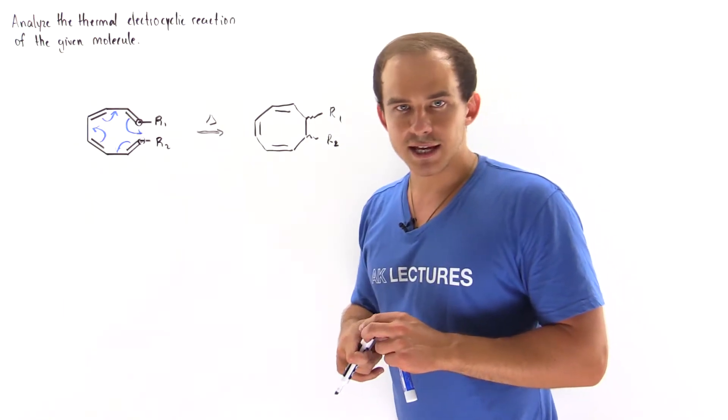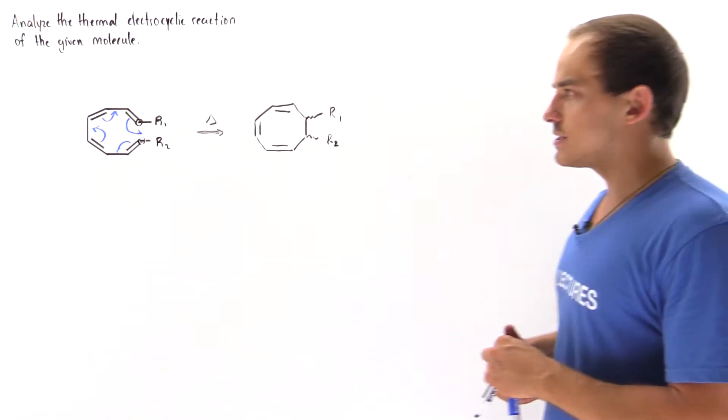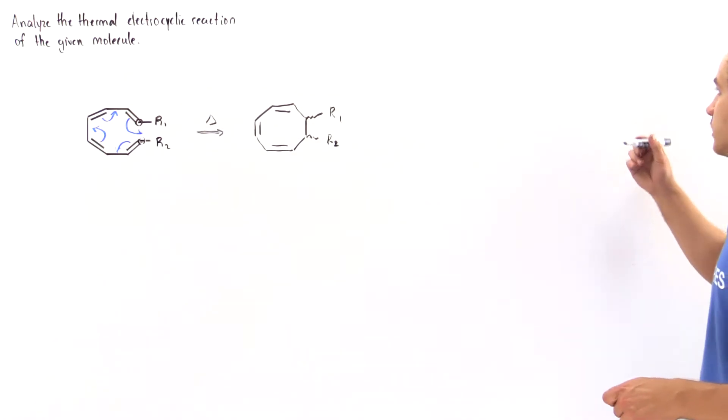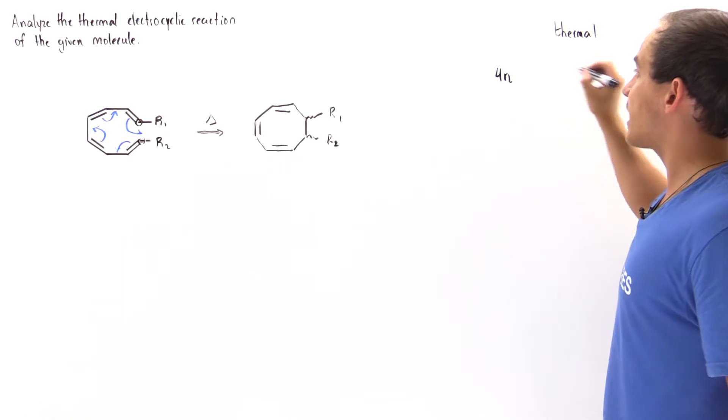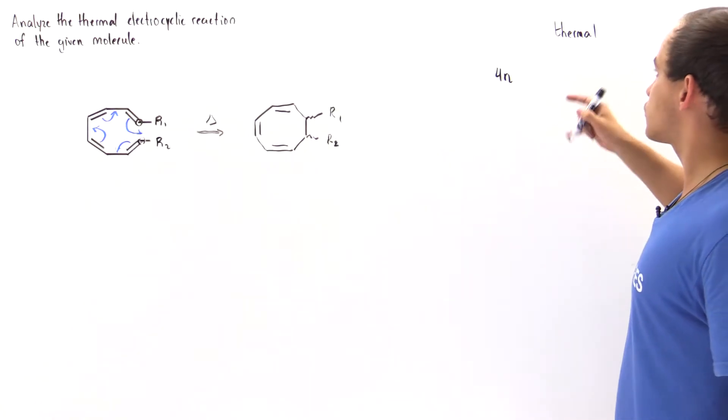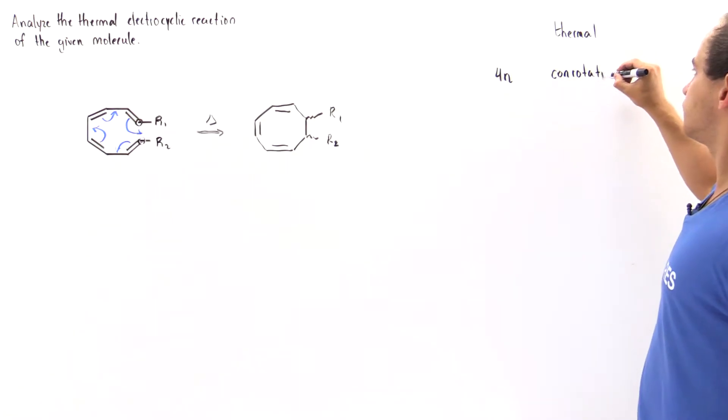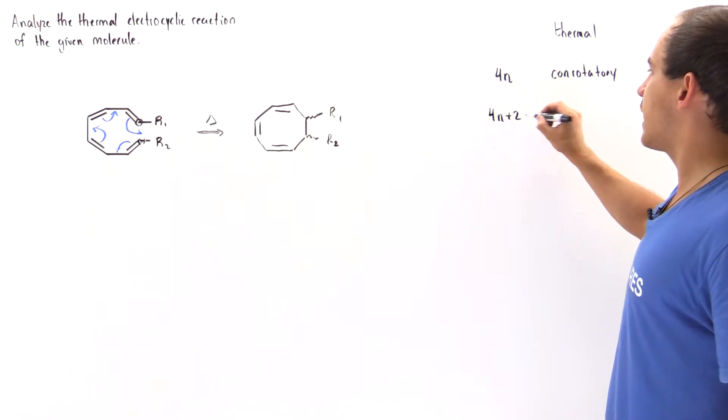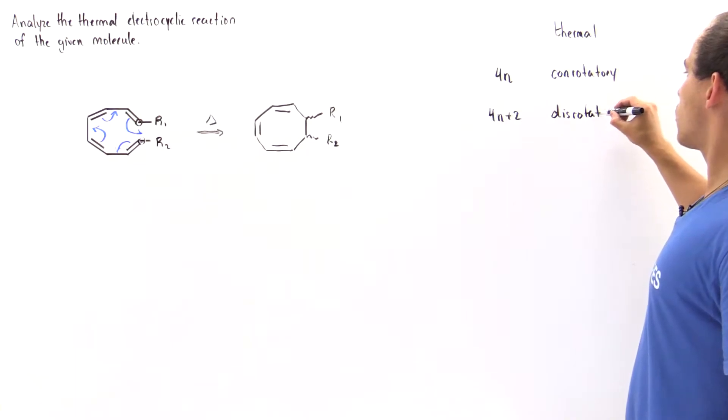Now the way we're going to solve it is by recalling what we discussed in the previous lecture. We said that if we are under thermal conditions and we have 4n pi electrons, then our rotation is conrotatory. If however we have 4n plus 2 electrons in the pi system, rotation is disrotatory.